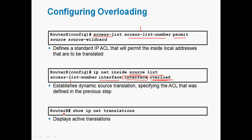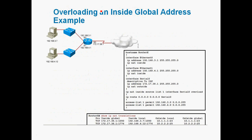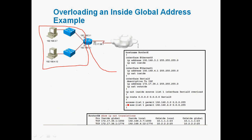After configuring overloading, we can verify using 'show ip nat translations', which displays active translations. In this example, the organization network uses private IP addresses 192.168.3.7 and 4.12, both in the Class C private address range. In global configuration mode, we enter: 'access-list 1 permit 192.168.3.0 0.0.0.255' and the corresponding wildcard mask for the second network, allowing both networks to be translated.